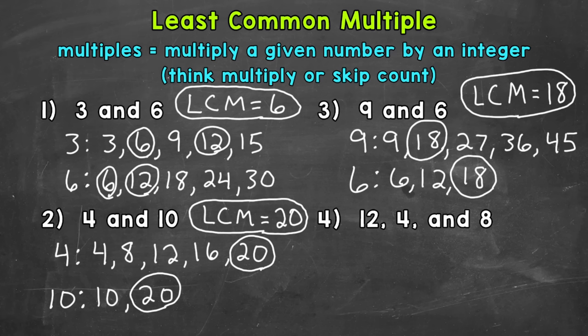We can always extend our lists further in order to find more common multiples. But since we want the least, we need to focus on that least. And once we have that least common multiple, we have our answer. Let's move on to number four, where we have 12, four, and eight. So we have three numbers, and we need to find the least common multiple between all three.